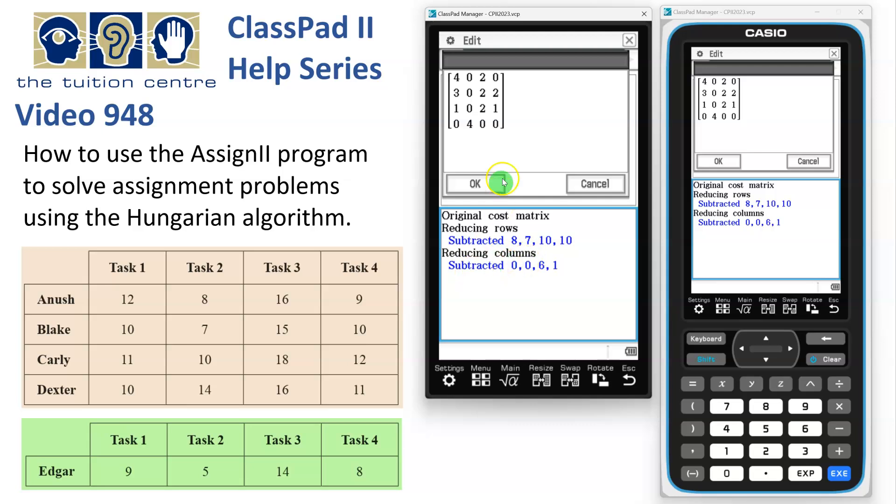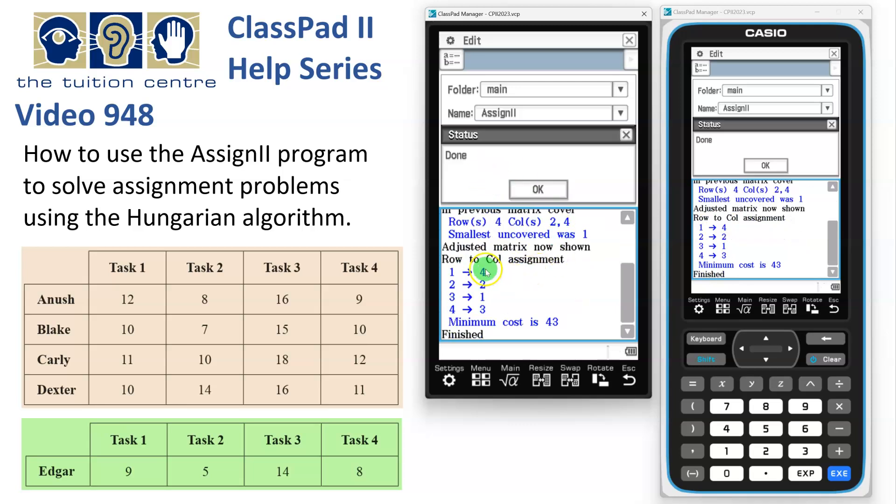Now after reducing the columns, this is what we're left with. So we've subtracted 0, 0, 6 and 1. And then next up, in the previous matrix we've covered row 4 and columns 2 and 4. The smallest uncovered number was 1, and after adjusting by that, this is what we get. And OK again.